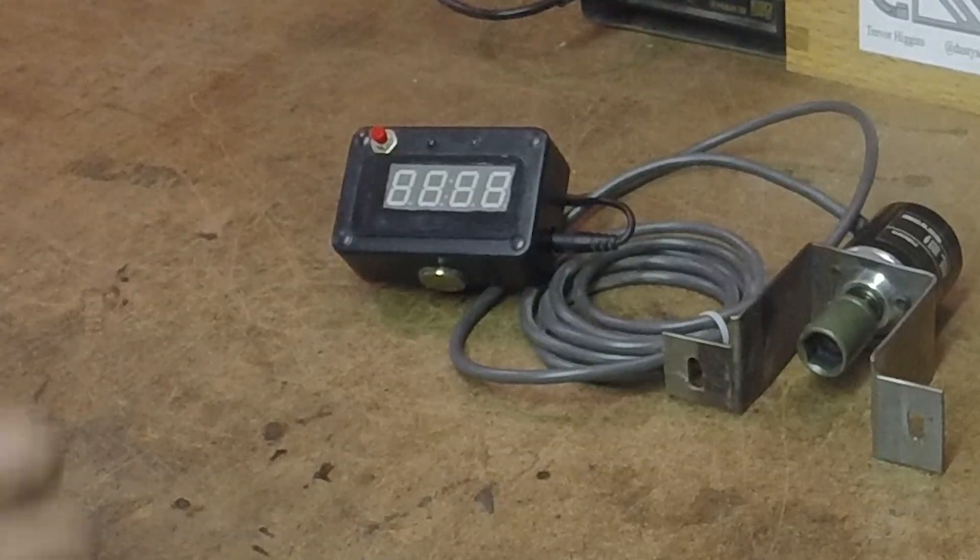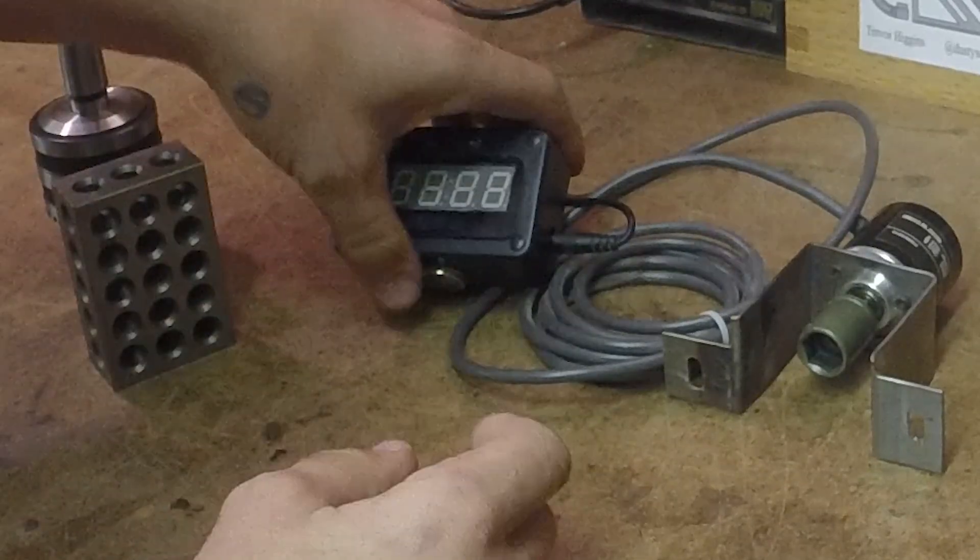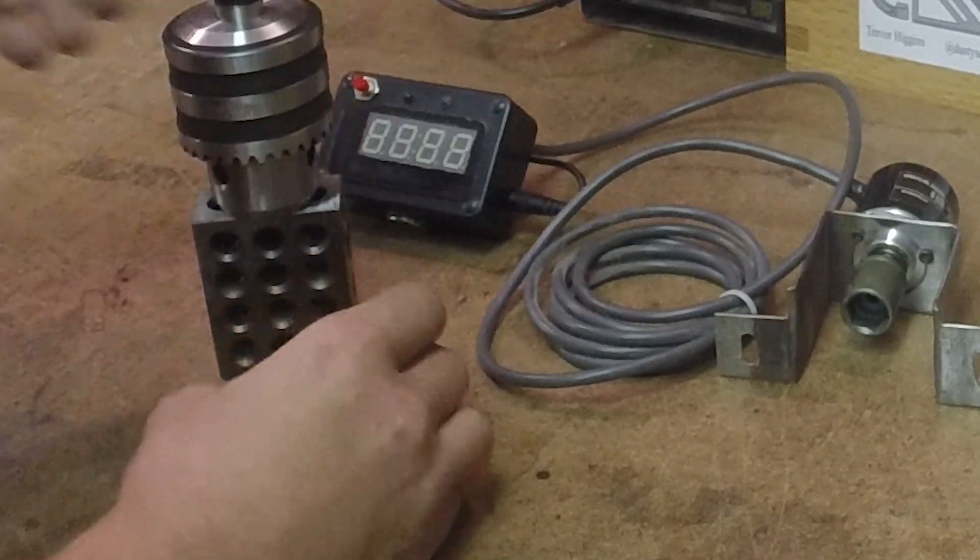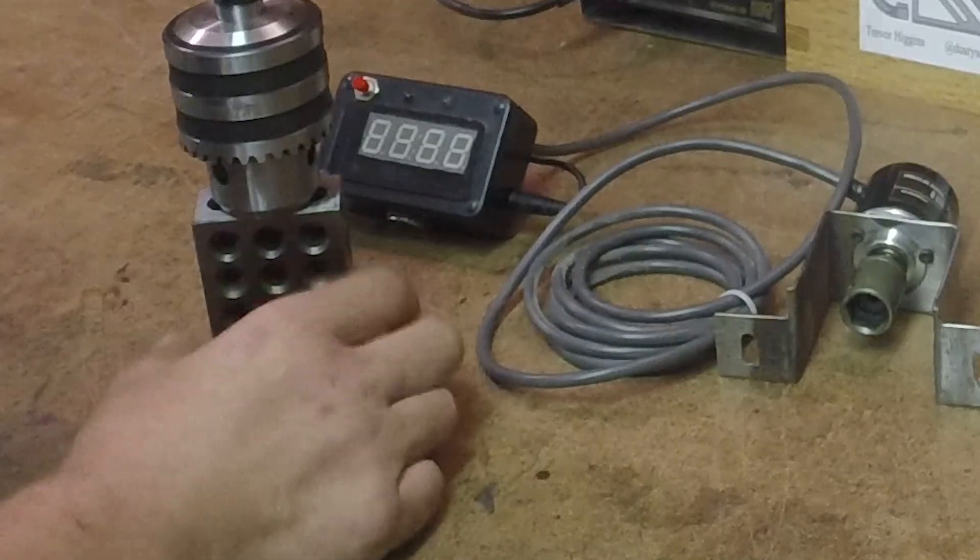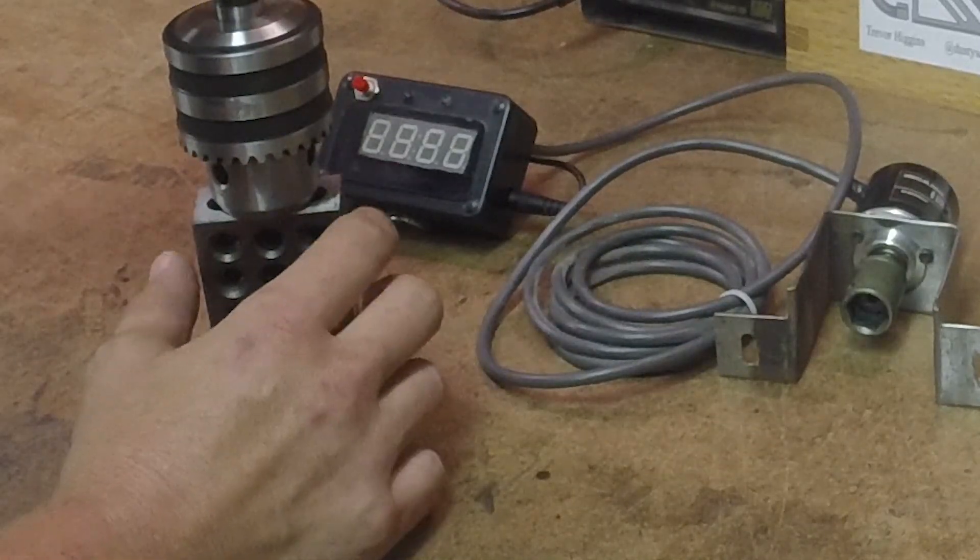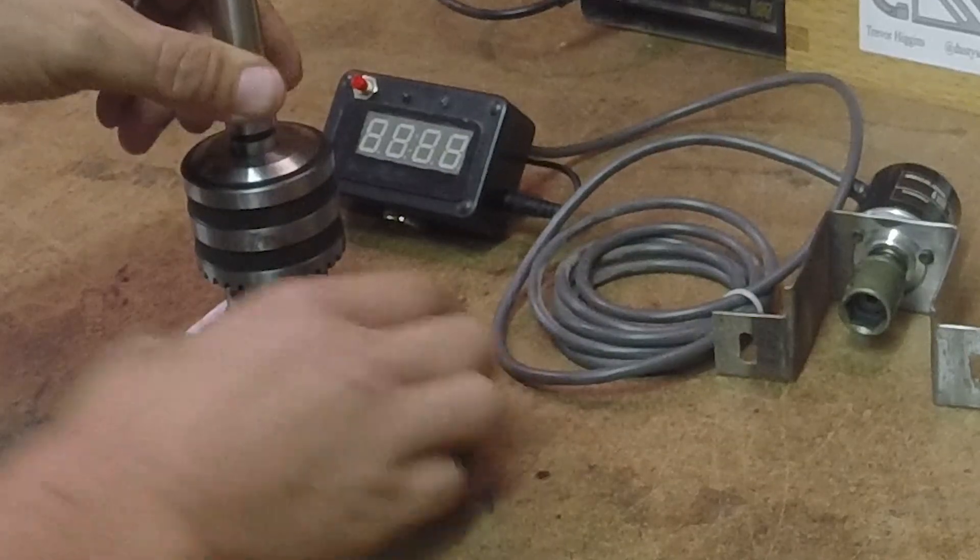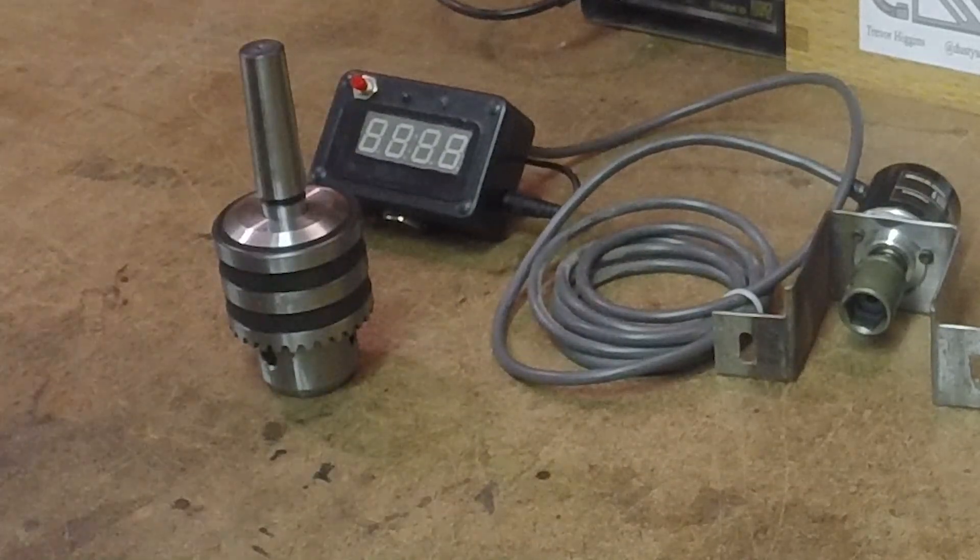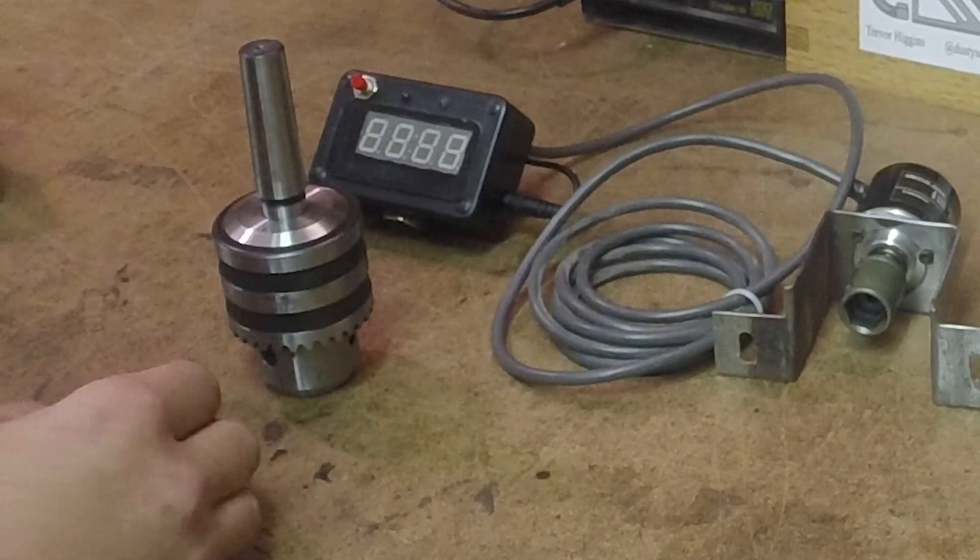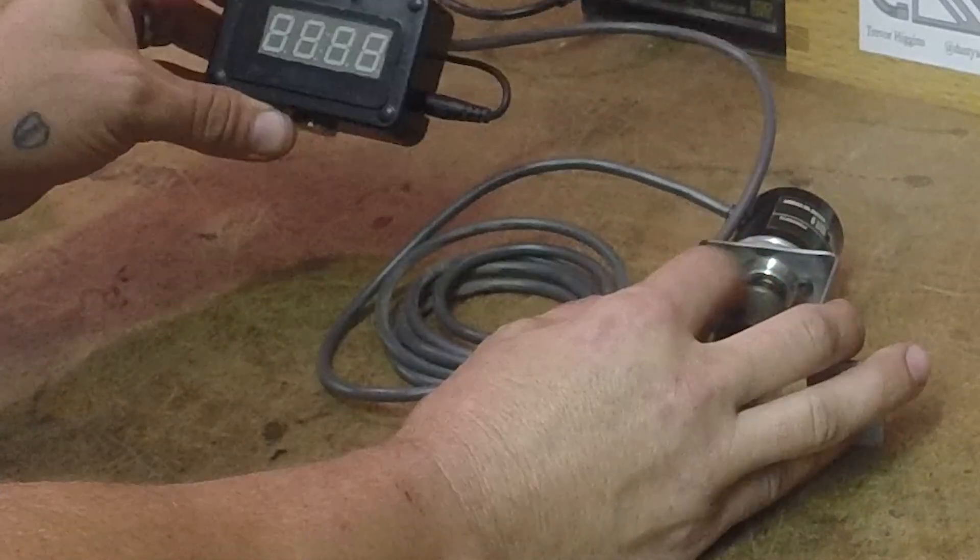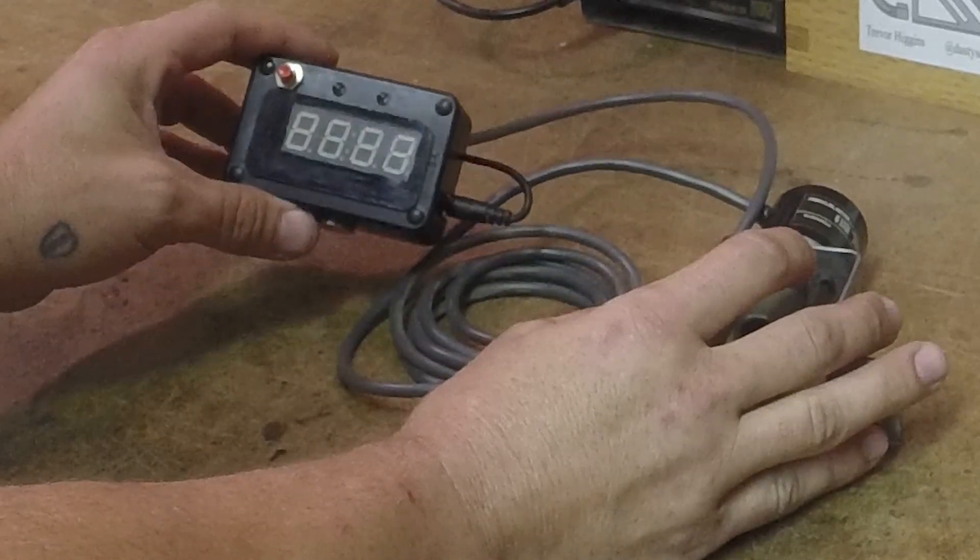The way that I calculated what the Arduino needs to know is I raised the table up to the chuck with it on a three two one block, zeroed it out, then measured it down to two, down to one, and down to the table. And with those numbers I could get what the translation between the encoder would be towards real-world numbers.